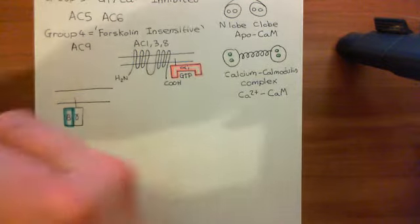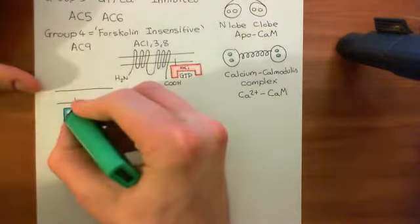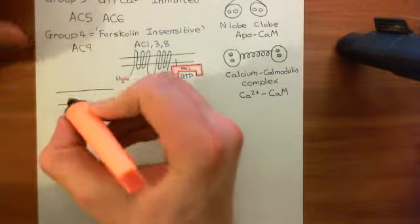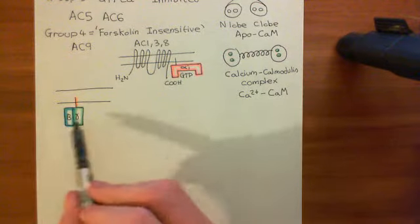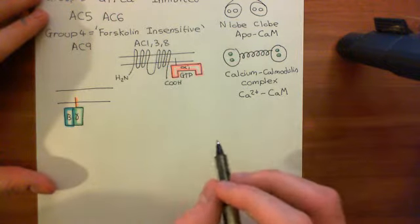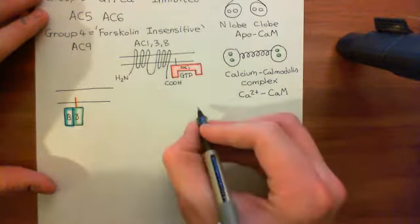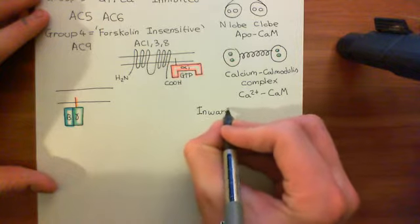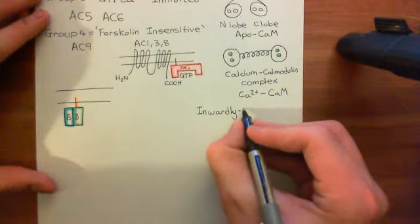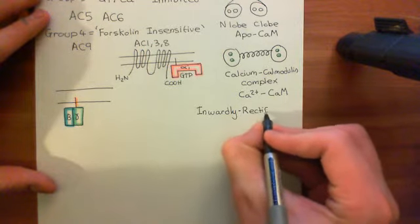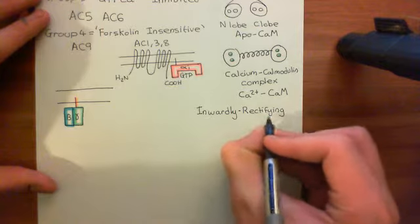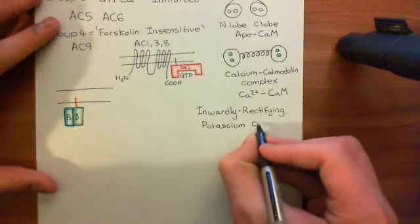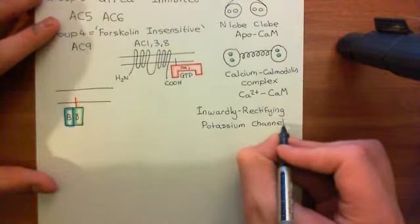The beta-gamma subunit is going to go and bind to one of these potassium channels — specifically an inwardly rectifying potassium channel. I want to briefly discuss the structure of inwardly rectifying potassium channels, because there are specific types that these beta-gamma subunits are going to interact with.